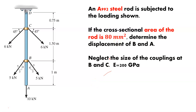Hi, this is Professor Cummings, and I have another problem I wanted to work through as an example, since we are working on axial loading and strength of materials. To look at this problem, we can start by reading what it says. We have an A992 steel rod subjected to the loading shown. You can see you've got multiple loads on this rod. The cross-sectional area of the rod is 80 millimeters squared.